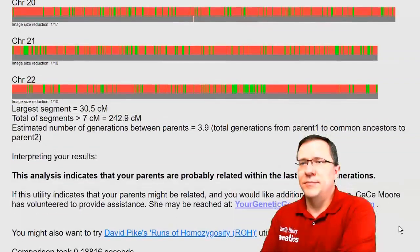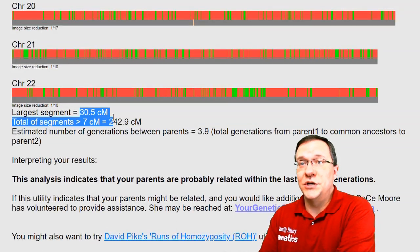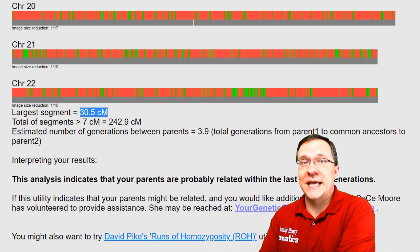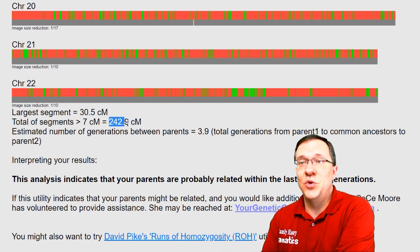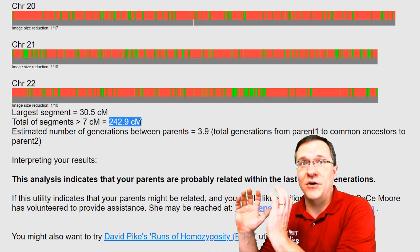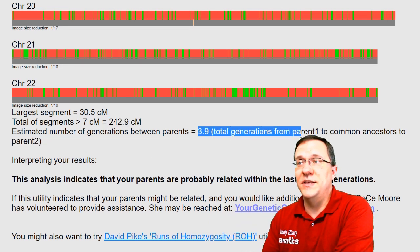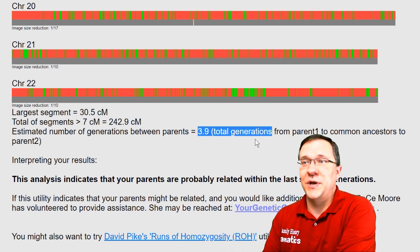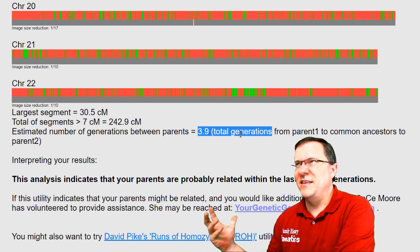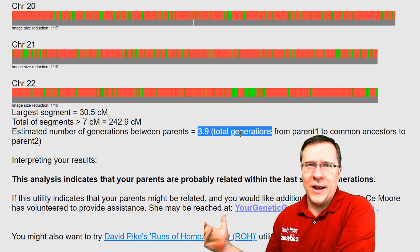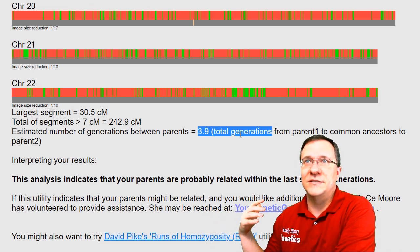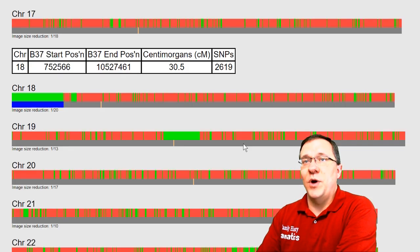Scrolling all the way down to the bottom, the largest segment was actually 30 centimorgans — a really large segment — and there's a total of 242 centimorgans that are part of these runs of homozygosity. It gives you an estimate of the number of generations: about four generations between one parent and the other, so that's the great-great-grandparents level.